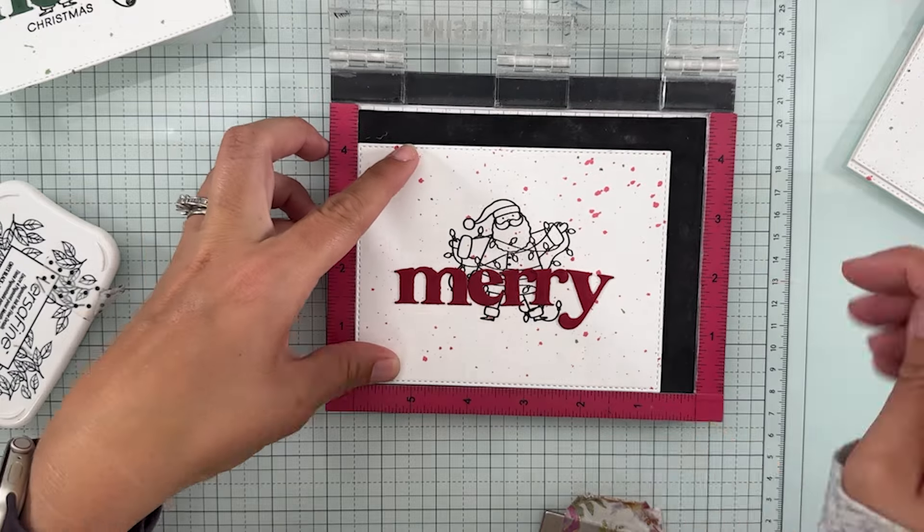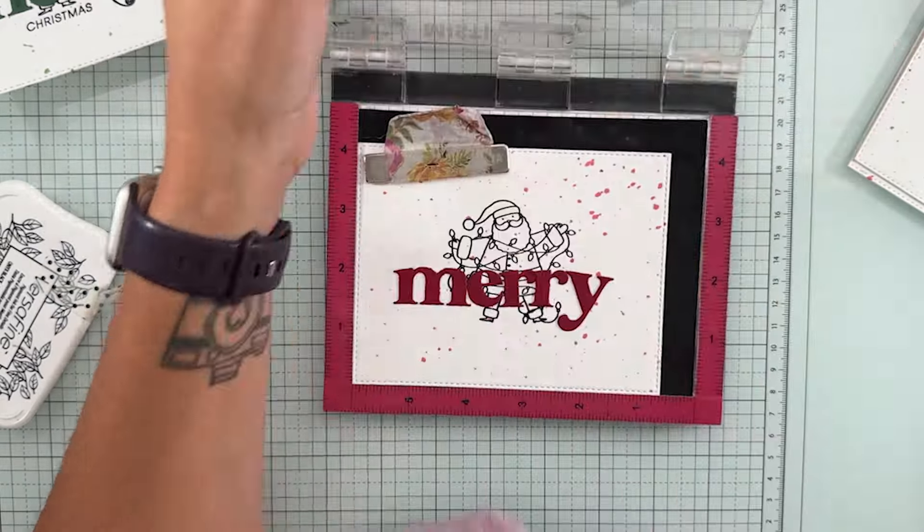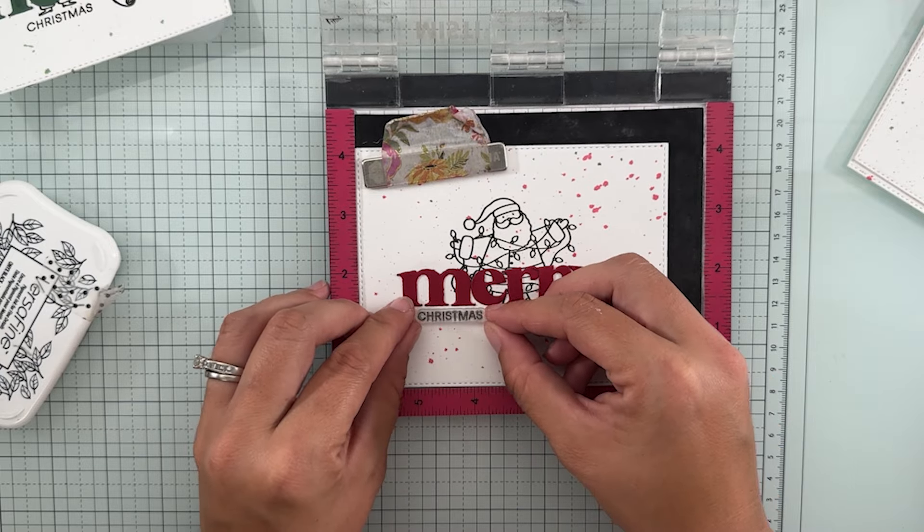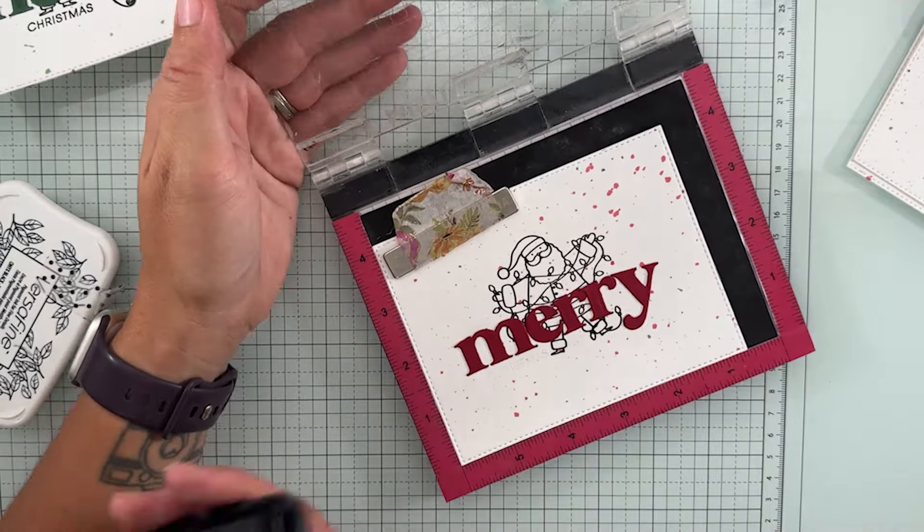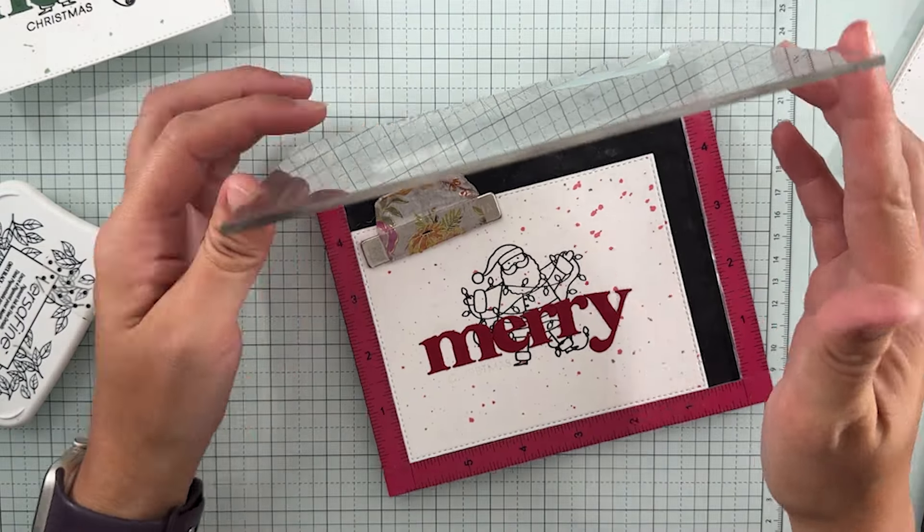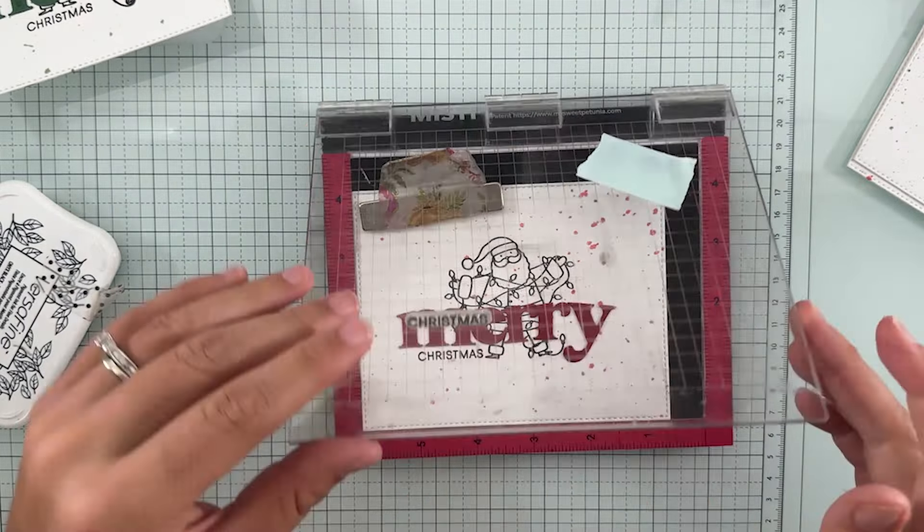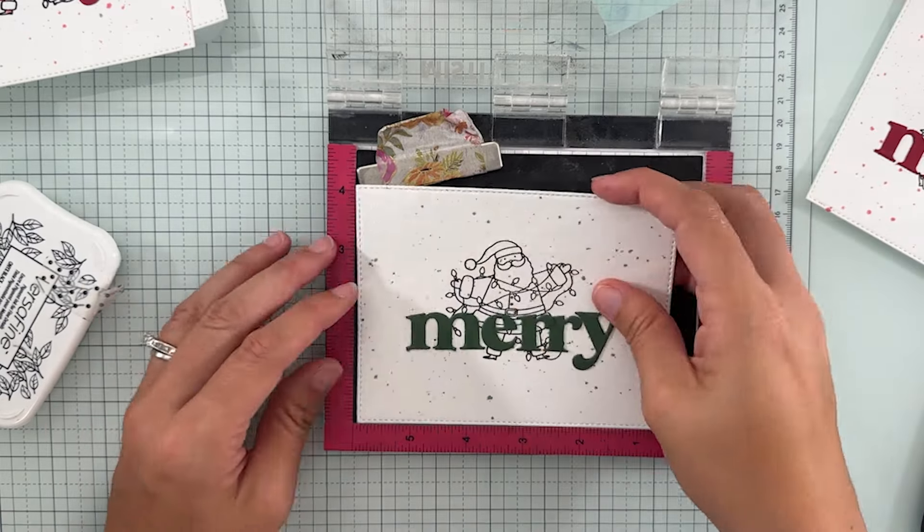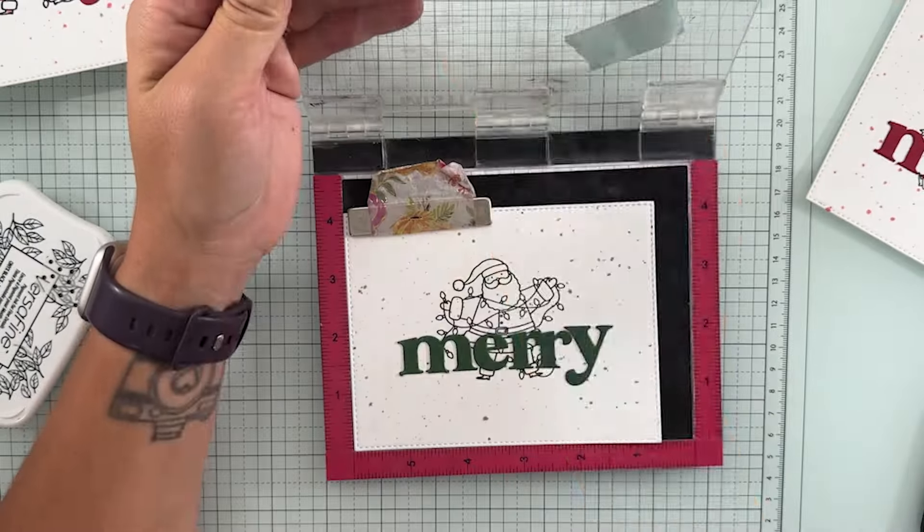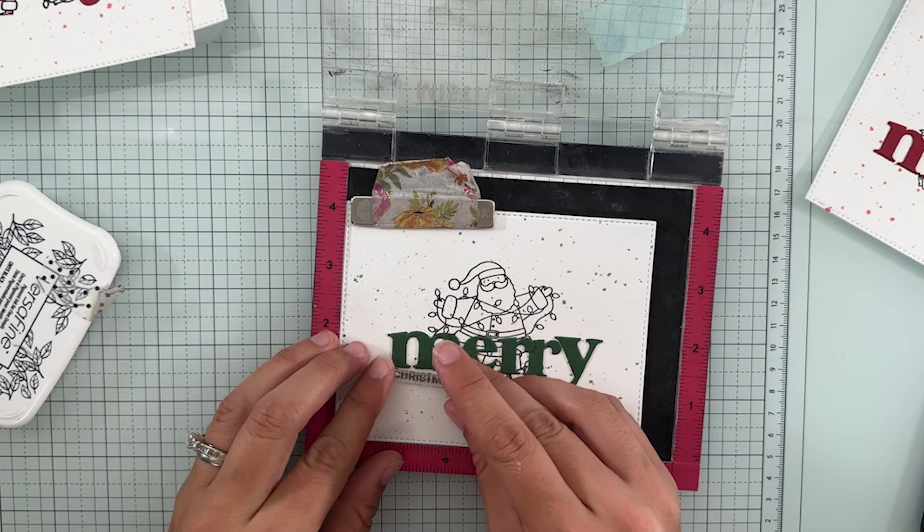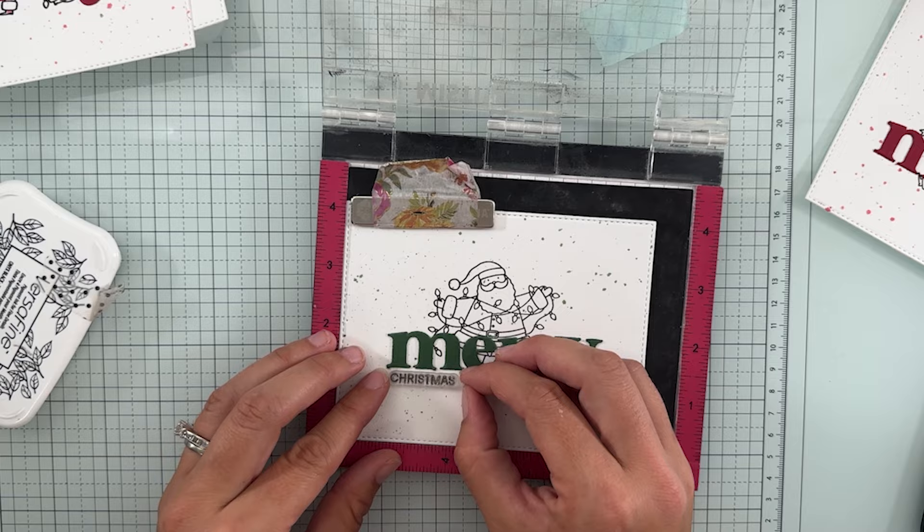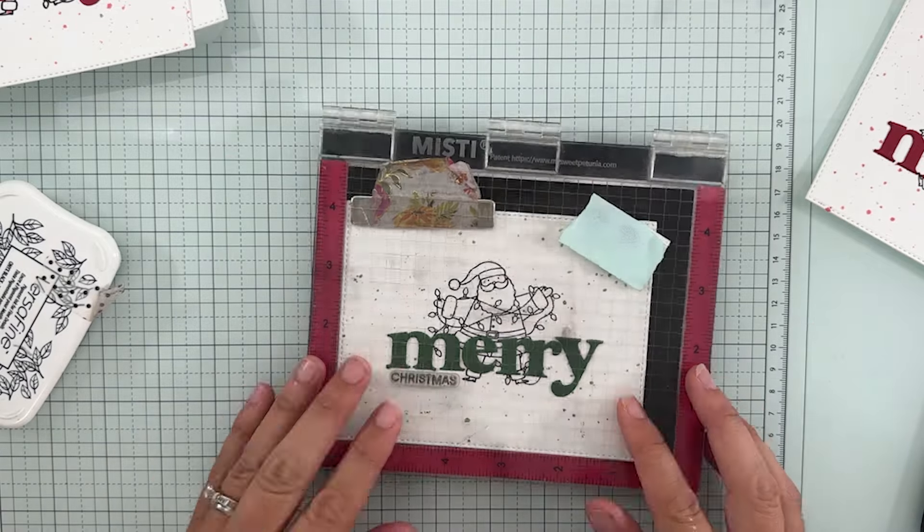I did move the Christmas sentiment. It did come from a Hello Bluebird set. It was just a regular stamp says Christmas. I didn't think that it needed to be center stage. I kind of wanted it to be a little bit smaller. Again I did move it around images just so that it looked good for that image. I don't think there's a rhyme or reason as long as it says it on there. I think it's perfect.